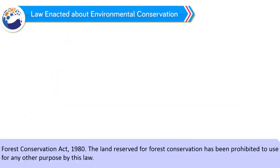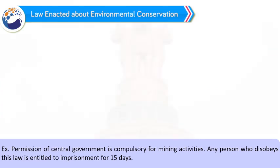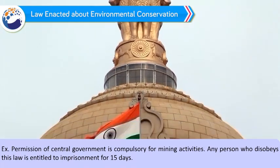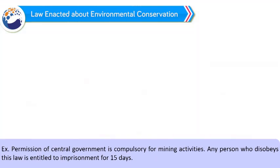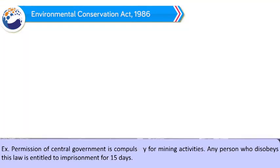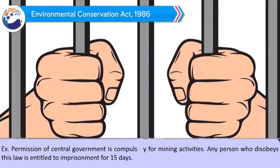Laws enacted about environmental conservation: Forest Conservation Act 1980 - The land reserved for forest conservation has been prohibited from use for any other purpose by this law. Prior permission of the central government is compulsory for mining activities. Any person who disobeys this law is entitled to imprisonment for 15 days.